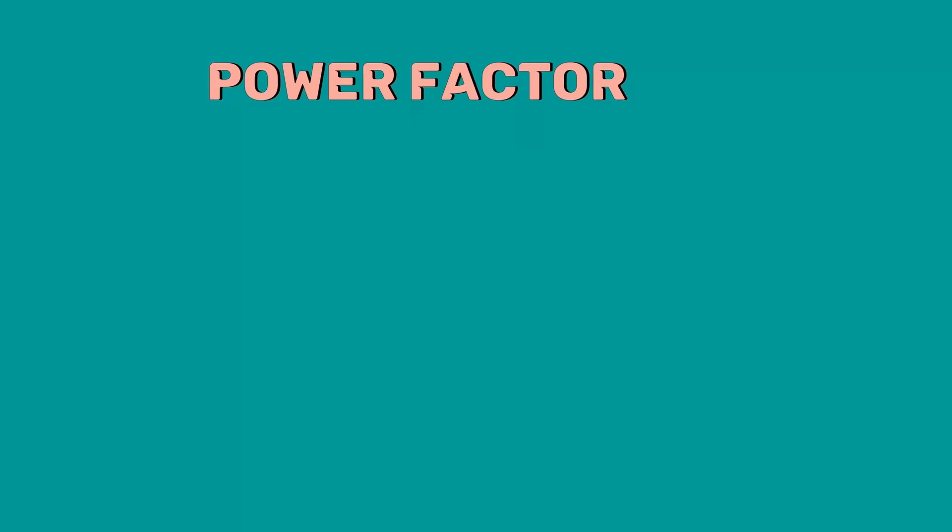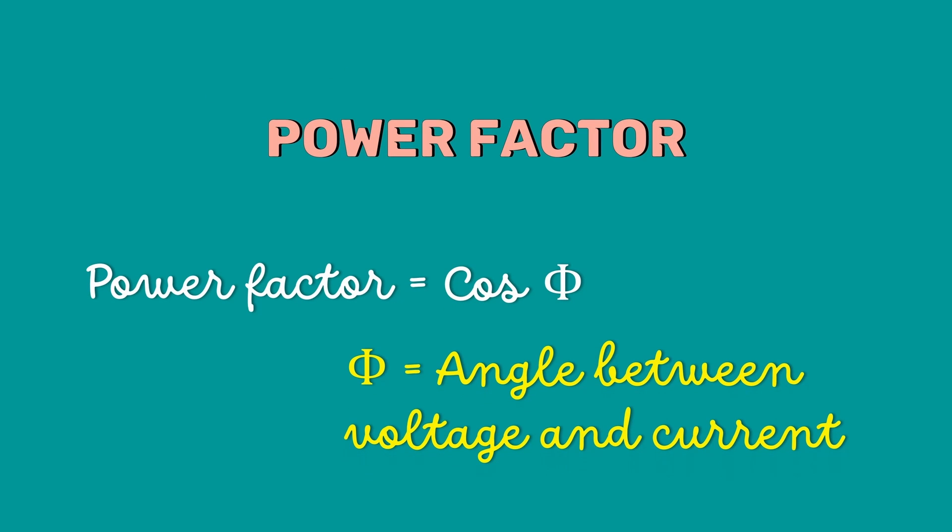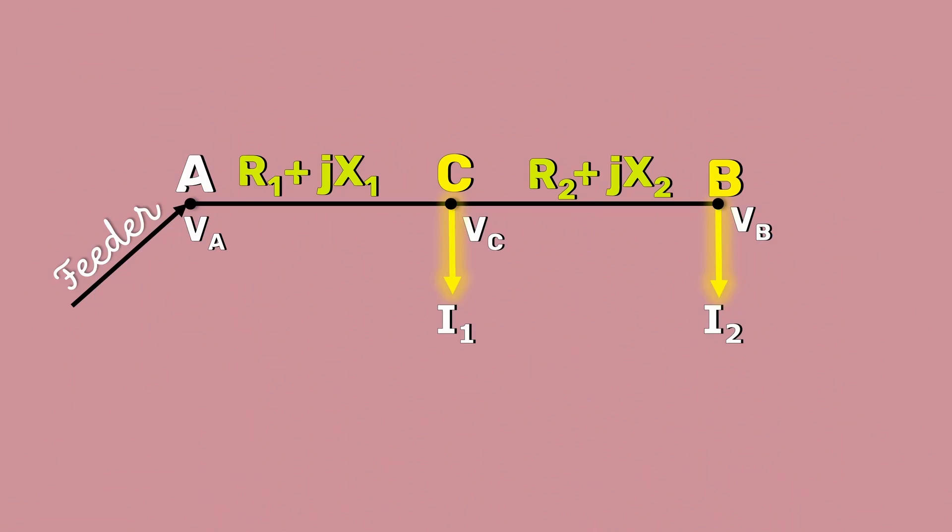Another important factor we should consider is power factor. It is the cosine angle between voltage and current. Loads tapped off from the distributor are generally at different power factors. Let us consider our power factors as cos phi1 and cos phi2.